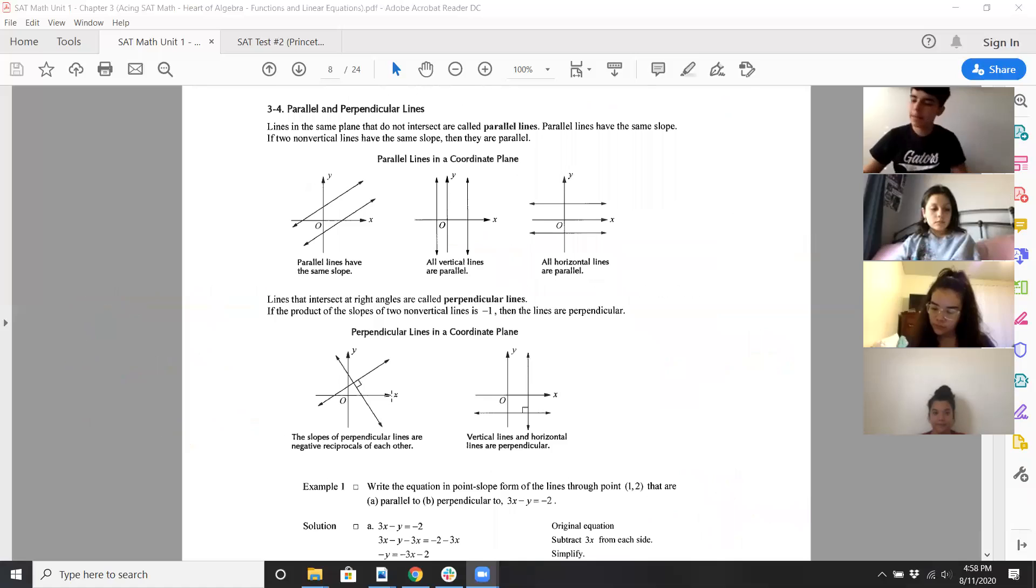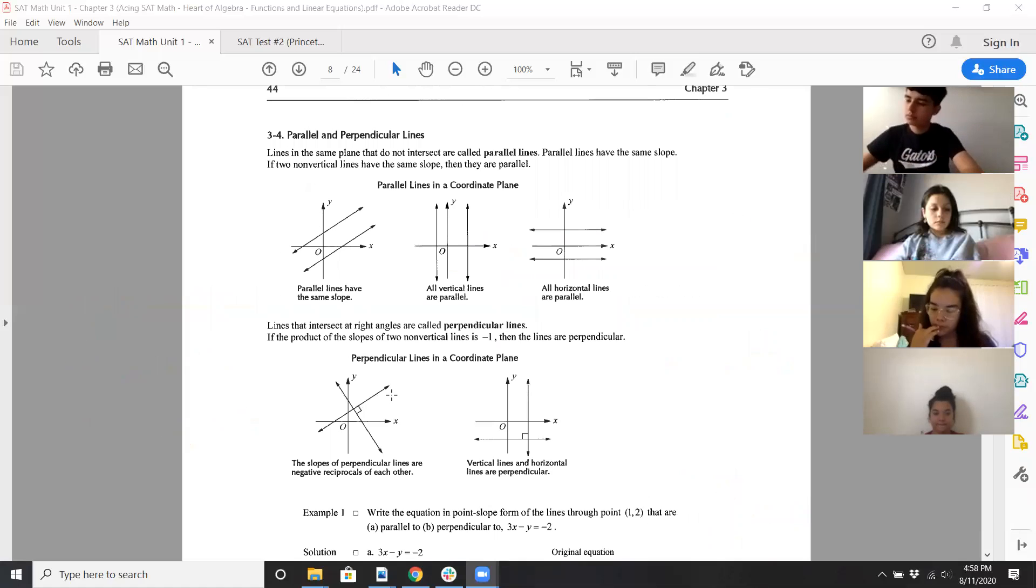And then for three, four parallel and perpendicular lines. Remember, parallel lines don't touch. They have the same slope. All vertical lines are parallel. We know this. Horizontal lines are also parallel. Sorry.